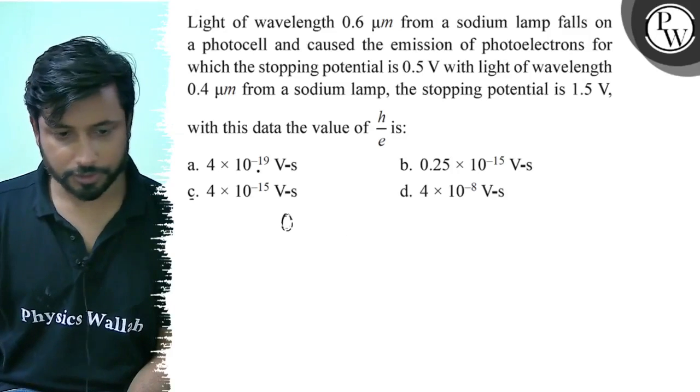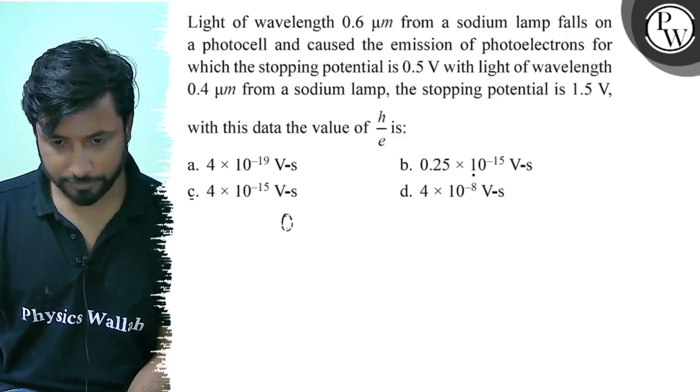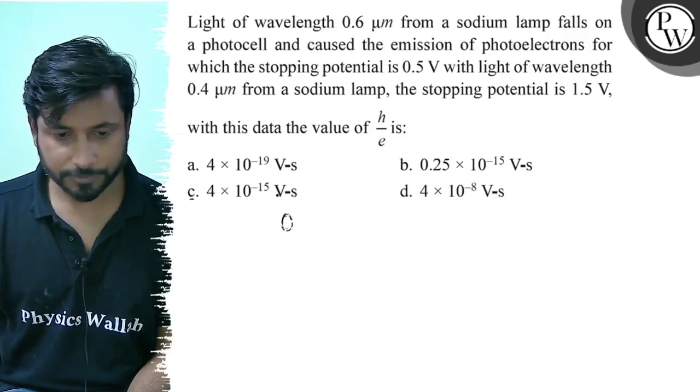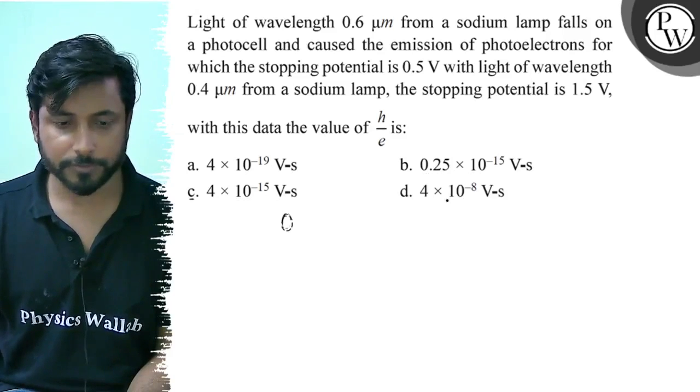Option a, 4 into 10 to the power minus 19. Option b, 0.25 into 10 to the power minus 15. Option c, 4 into 10 to the power minus 15. Option d, 4 into 10 to the power minus 18.